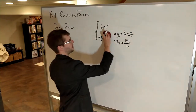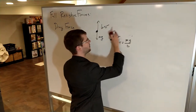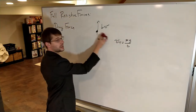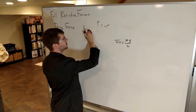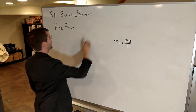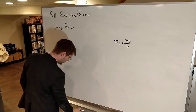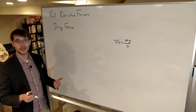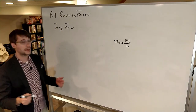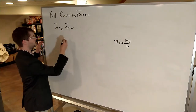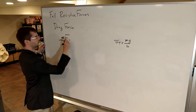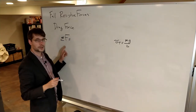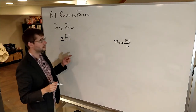We'll hold on to that equation and come back to it at the end. But now I want to think about not just what happens at the end, but what happens in the middle as the object is falling. We're going to write down the net force equation.